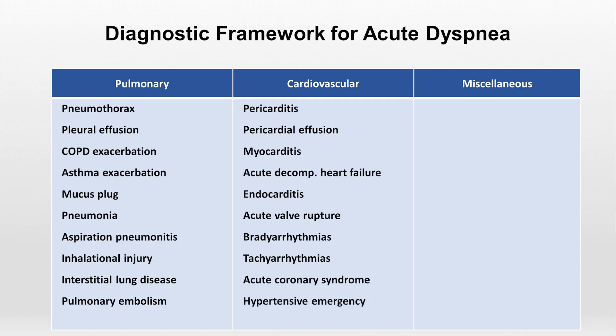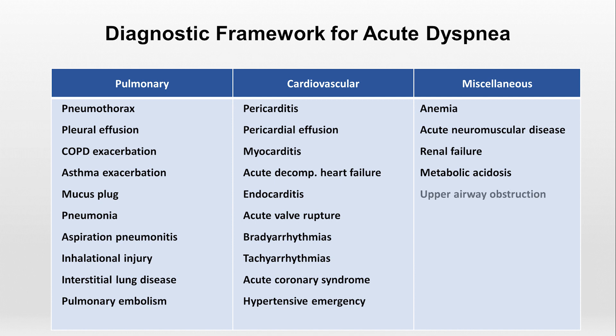In the miscellaneous category, we have any cause of acute anemia, acute neuromuscular disease that prevents the diaphragm from working properly, renal failure by leading to a buildup of excess fluid in the body, metabolic acidosis — in which the brain's respiratory centers increase a person's respiratory rate and/or depth of breathing as a compensatory mechanism to maintain normal pH — upper airway obstruction such as aspiration of a foreign body, and anxiety, for example a panic attack.